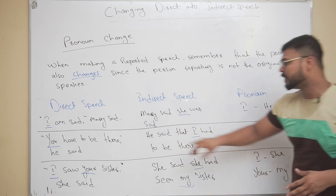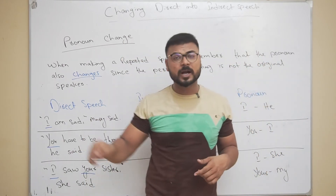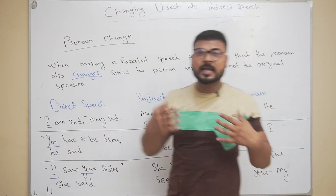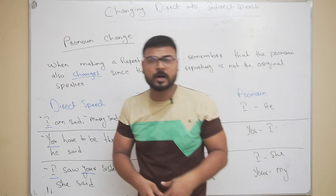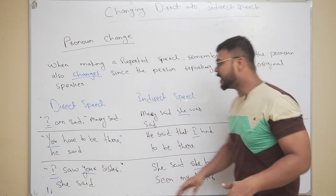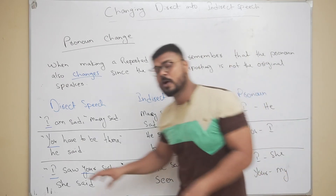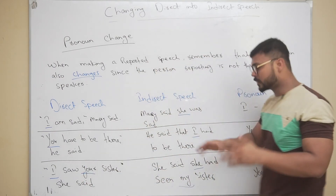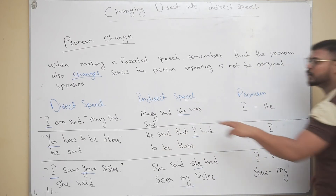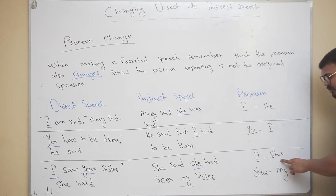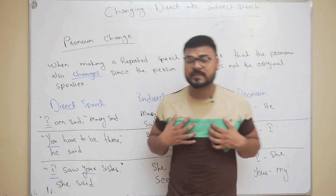Another example: 'You have to be there,' he said. In indirect speech: he said that I had to be there. If someone is talking to me and says 'you must be there,' when I report it I say 'you said that I had to be there.' So pronouns like 'I' change to 'he' or 'she,' 'you' changes to 'I,' and 'your' changes to 'my' depending on the context.